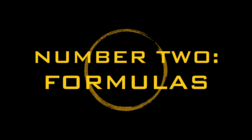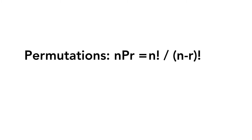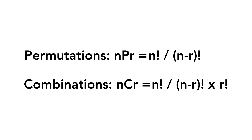The second thing you'll need to know are the formulas for permutations and combinations. You'll have to memorize these, but luckily they're pretty similar, so once you've memorized one, you'll pretty much have memorized both. Permutations are denoted as nPr — n being the pool you're picking from and r being the number of items picked — and the formula is n factorial over n minus r factorial. Combinations are denoted as nCr, and the formula is n factorial over n minus r factorial times r factorial. The only difference between the two formulas is the extra r factorial in the denominator for combinations.